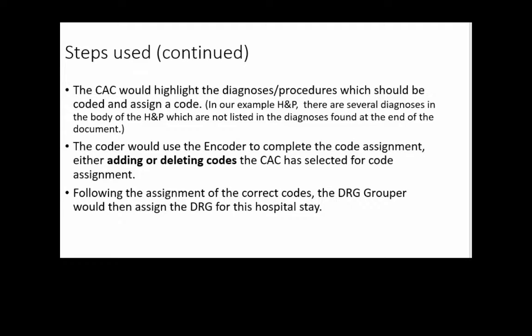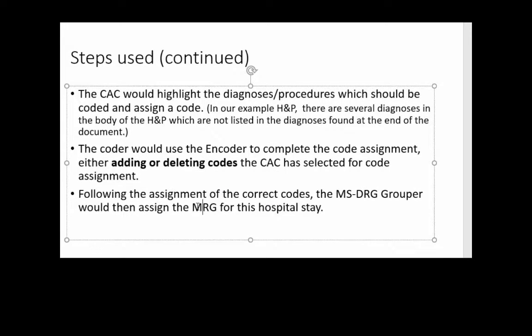The CAC would highlight the diagnoses and procedures which should be coded and assign a code. You'll see an example later where the CAC captures diagnoses not captured the first time, which are then added. The coder looks at the encoder and decides whether to add or delete the codes the CAC has selected. Following everything that's been assigned, the DRG grouper assigns the DRG for the hospital stay — really an MS-DRG. The government changed the name, but both terms are used interchangeably; the correct term is MS-DRG.